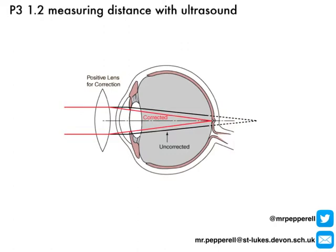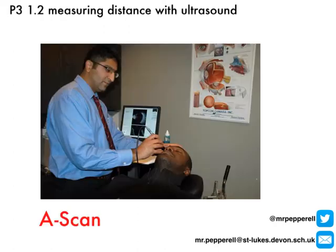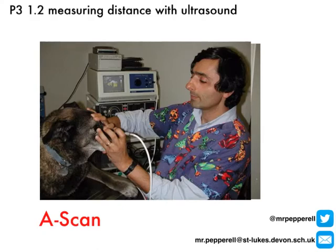He does it using ultrasound. This type of scan using ultrasound is actually called an A-scan. A transducer is placed on the front of the eye, sending ultrasound pulses into the eye, which are reflected back each time they reach the interface between two types of tissue. The reflected pulses are then used to create an image on the screen. And here's a man doing it to a dog.